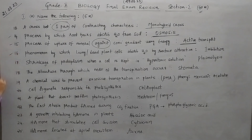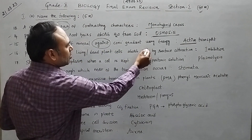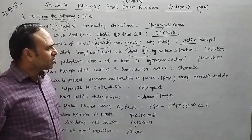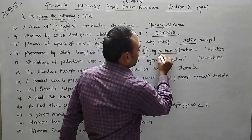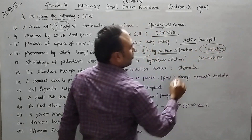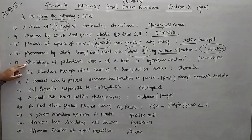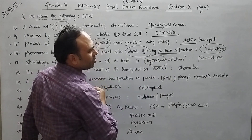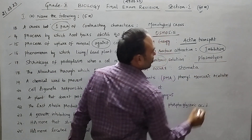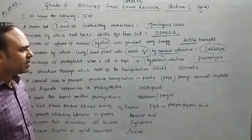Question 16 — the phenomenon by which living or dead plant cells absorb water by surface attraction is known as imbibition. Question 17 — during the rainy season we observe the shrinkage of the protoplasm when a cell is kept in a hypertonic solution; that is plasmolysis. Lysis means breakage of the plasma membrane.